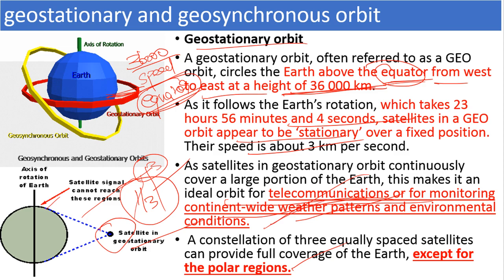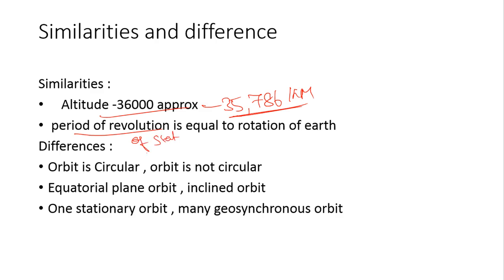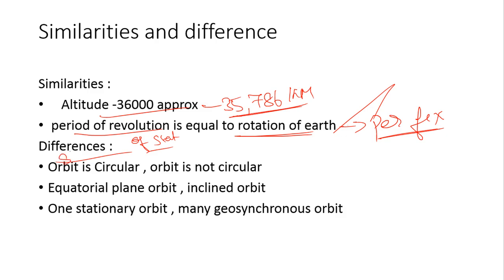Now let's see the similarities and differences between geostationary and geosynchronous orbits. The similarities: the altitude is the same — 35,786 kilometers above the earth surface — for both. The period of revolution of the satellite is equal to the rotating speed of the earth for both, which is why the satellite appears to remain permanently fixed in the same position in the sky. Now the difference: geostationary orbit is a circular orbit, while geosynchronous orbits are not circular.